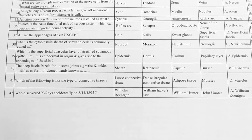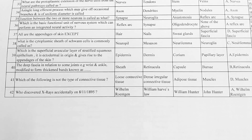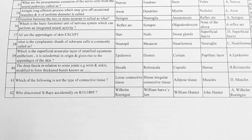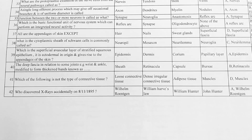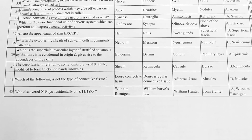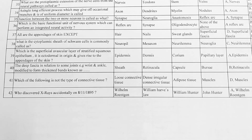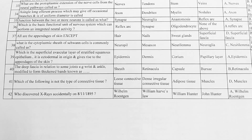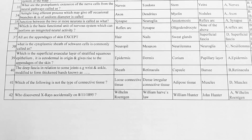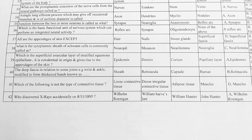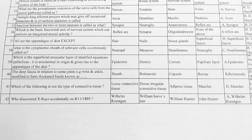Next, what is the cytoplasmic sheath of Schwann cells commonly called? Options: A. neutrophil, B. mesogen, C. neurolema, D. neuroglia. Option C is correct, neurolema.